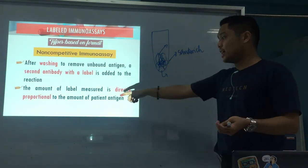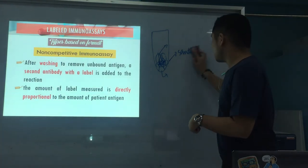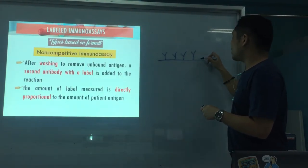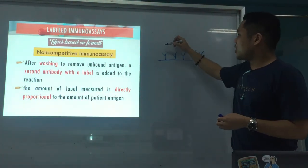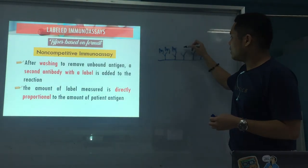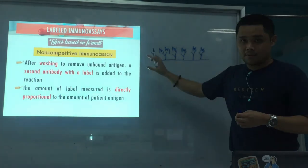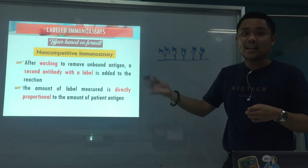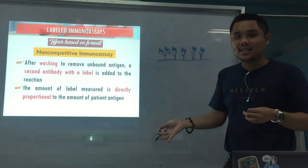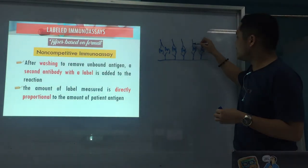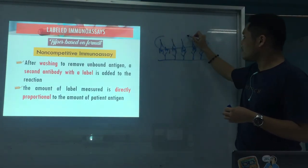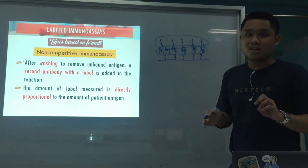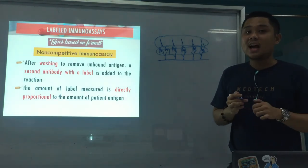In non-competitive immunoassay, the amount of label is directly proportional to the amount of patient antigen. If more antigen binds, more labeled antibody will bind to it — so more label is detected, meaning more patient antigen is present. I hope you understand the difference between competitive and non-competitive immunoassay.